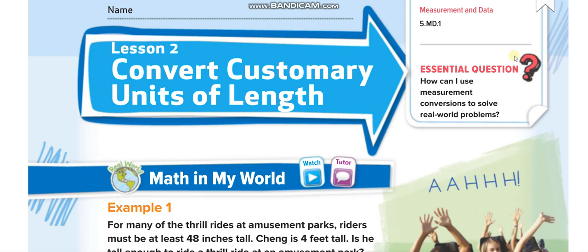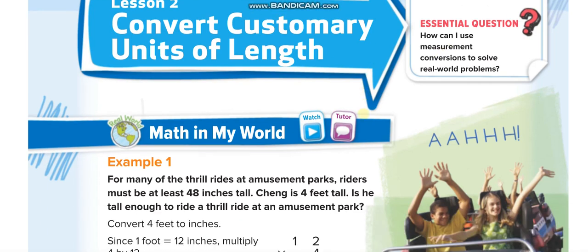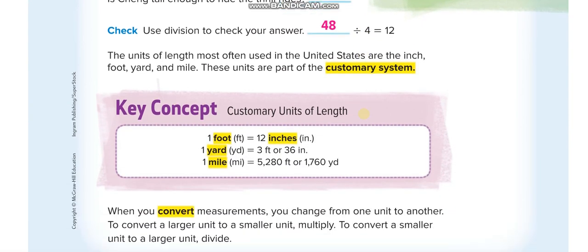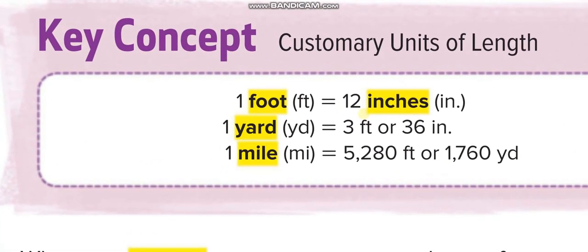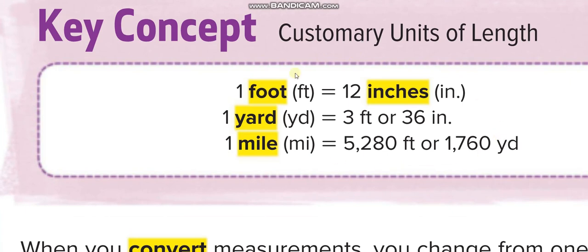To understand this lesson, you have to memorize these three lines. One foot is equal to 12 inches. One yard is equal to three feet. Now if one foot is 12 inches, three feet is three times 12, which is 36 inches. And one mile is equal to five thousand two hundred and eighty feet.